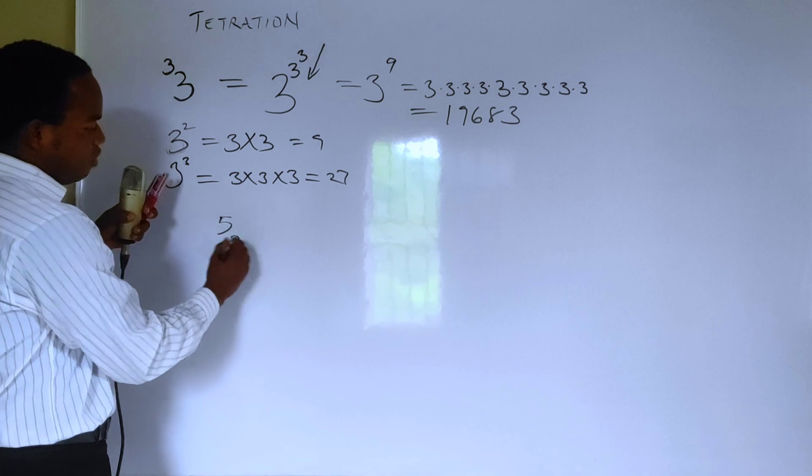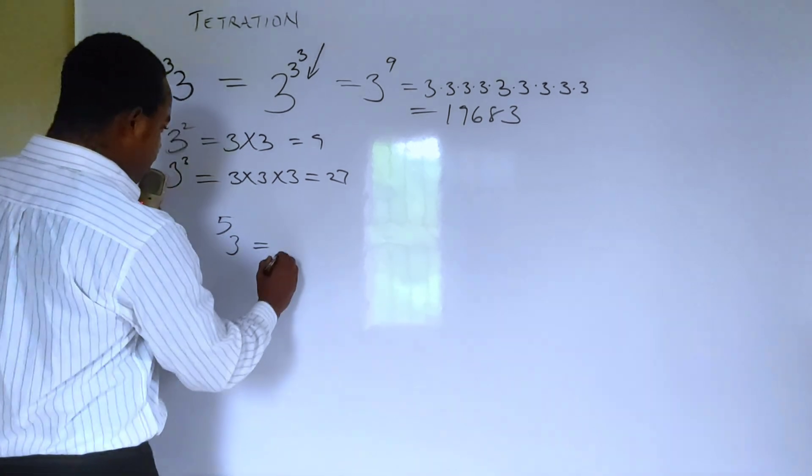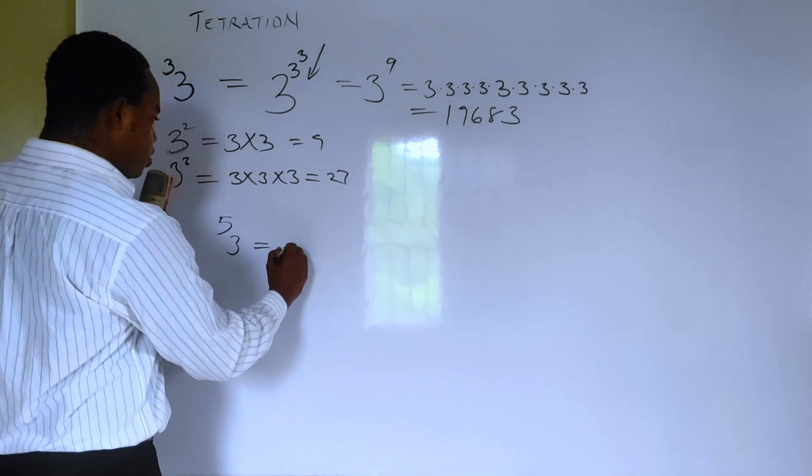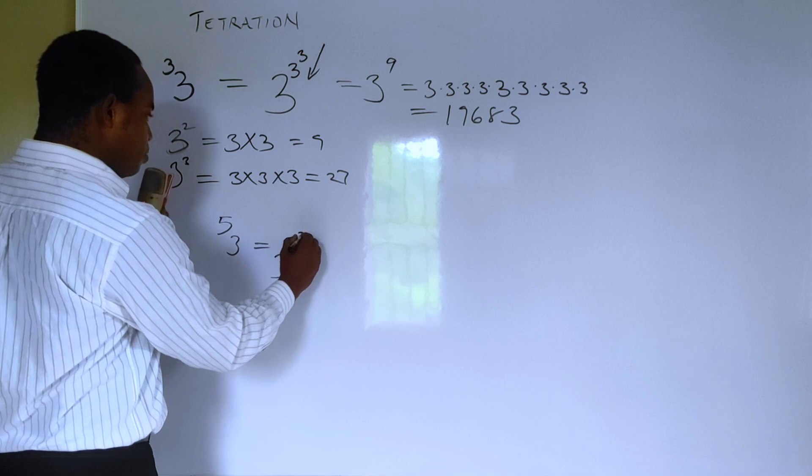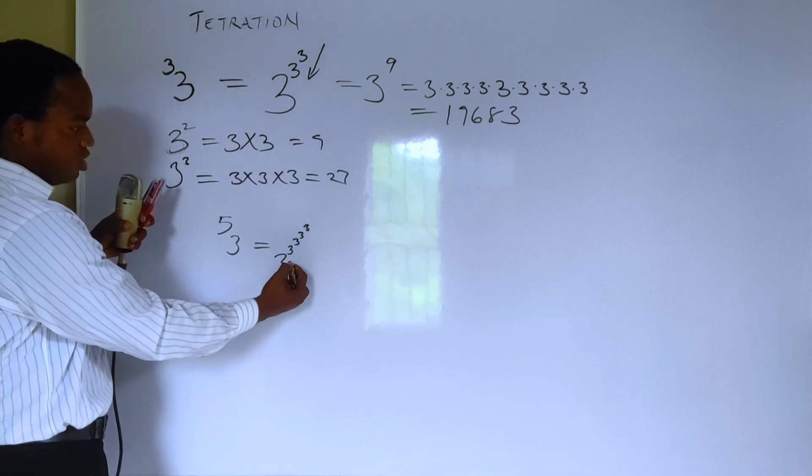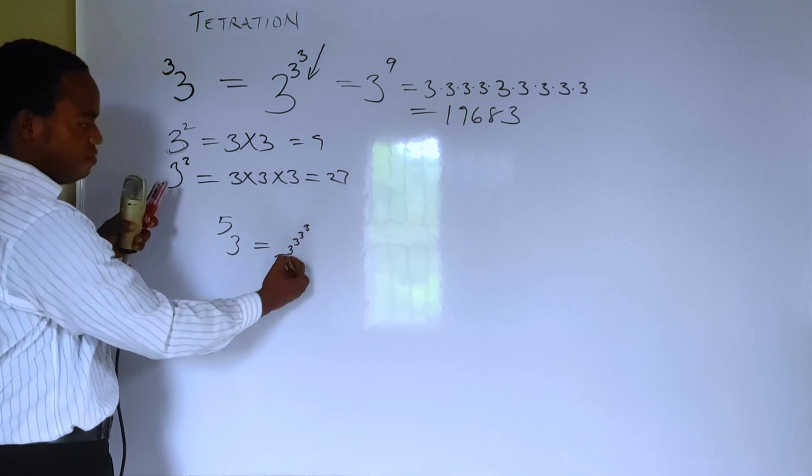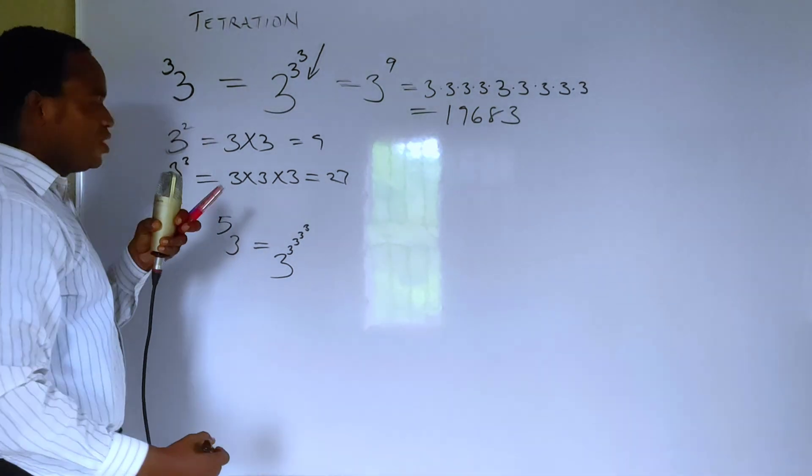So what would this be? This would be 3 to the power of 3 raised to power 3 and raised to power 3 and raised to power 3. Look at that. So the power tower, you have five raised to power 3 five times. Can you see that?